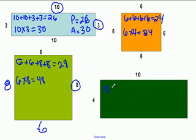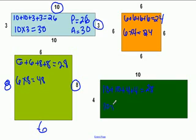This shape: ten plus ten plus four plus four equals twenty-eight. And ten times four is forty. So the perimeter is twenty-eight and the area is forty.